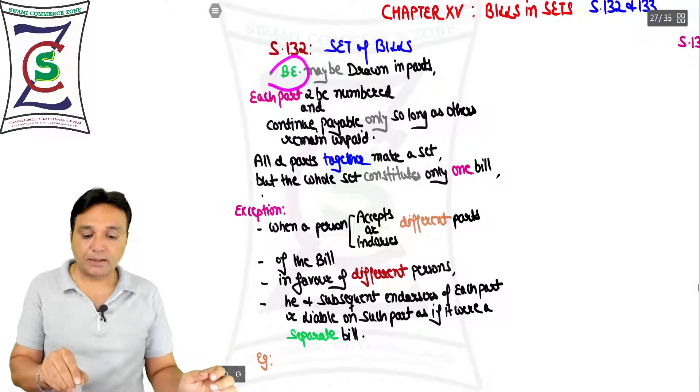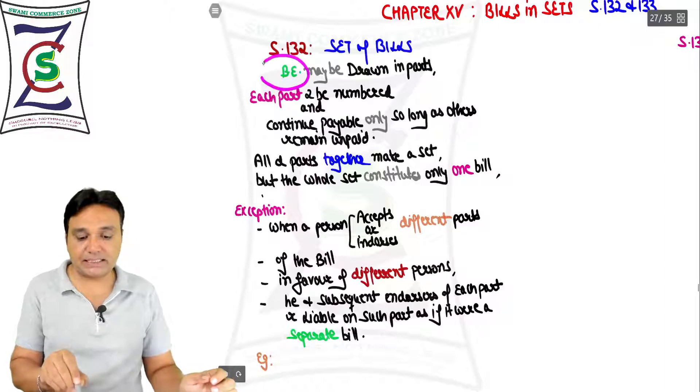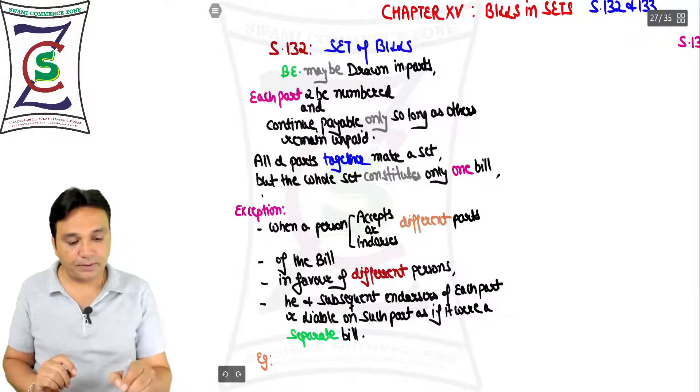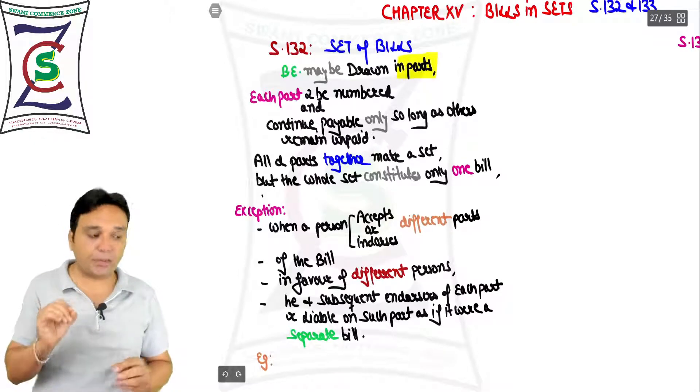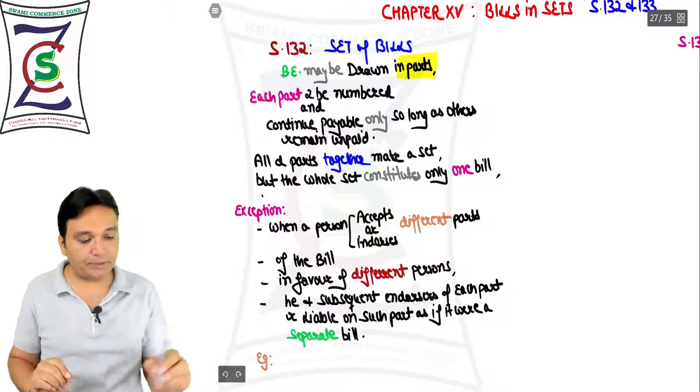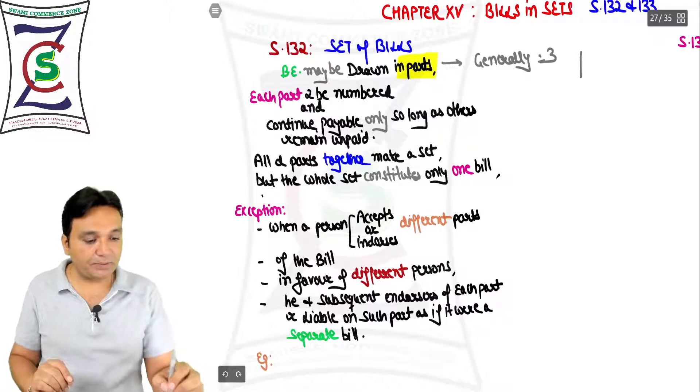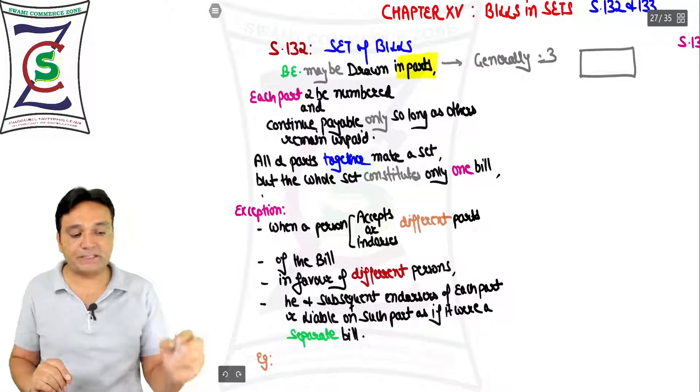Section 132 says bills of exchange may be drawn in parts. Let me tell you what exactly this is - generally three parts.